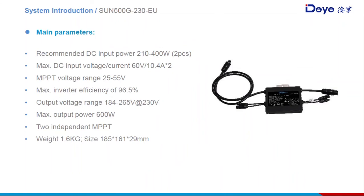This page tells some 500W module main parameters. As we can see, it can connect two PV modules at a power range of 210 to 410W, and it has two MPPTs with a maximum DC input voltage of 460V. The MPPT voltage range is 25 to 55V, maximum output power is 600W, and it weighs 1.6kg.